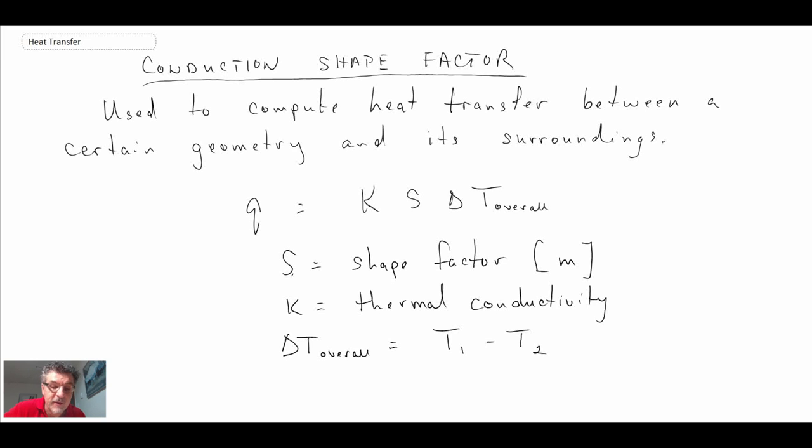Delta T overall is the temperature difference between the two systems that we're transferring the heat between. It'll make more sense when we look at an example problem.